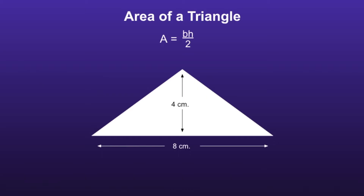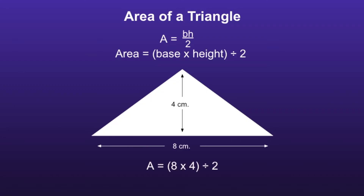We're also going to have to know how to find the area of a triangle. The formula for area of a triangle is A equals BH divided by 2, which means area is equal to base times height divided by 2. Notice the base times height is in parentheses — this lets us know that we have to multiply before we divide by 2. So if we look at the picture, we could use the equation A equals 8 times 4, since the base is 8 and the height is 4, and then we'll divide by 2. 8 times 4 is equal to 32, and 32 divided by 2 is equal to 16. So the area of the triangle is 16 centimeters squared.